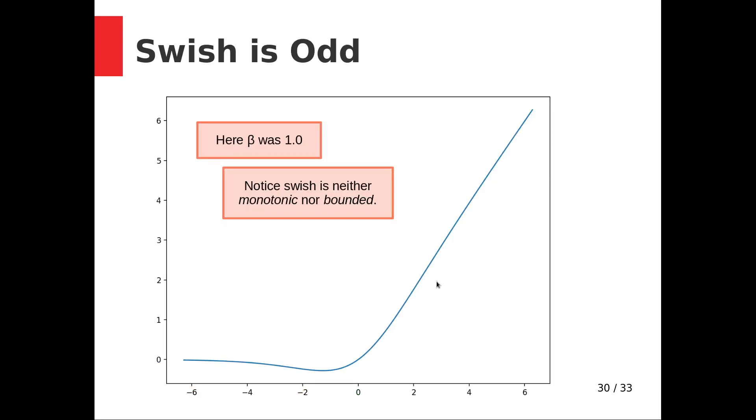There's a look at just Swish for the beta equals one value. Notice that it is actually less than zero here. Here's zero, I cannot draw. And notice that it's actually going down, then it goes up. And that it is bounded, I believe, to zero, but it is not bounded to the right. It approaches positive infinity at an input of positive infinity.